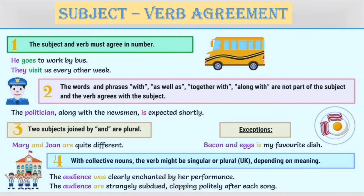They visit us every other week. The words and phrases 'as well as', 'together with', and 'along with' are not part of the subject, and the verb agrees with the subject. For example, the politician along with the newsman is expected shortly.